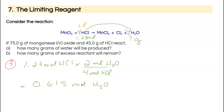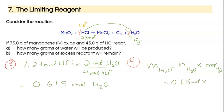Now I convert to a mass value. The mass of H₂O equals moles of water times the molar mass of water. Water has two hydrogens and one oxygen, giving a molar mass of 18.02 grams per mole. So 0.615 moles times 18.02 gives 11.1 grams of H₂O to three significant digits. To summarize the steps: balance, convert both reactants to moles, identify the limiting reagent, then use it to find moles and then mass of product.